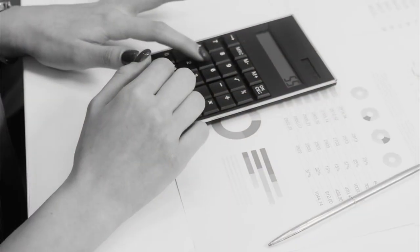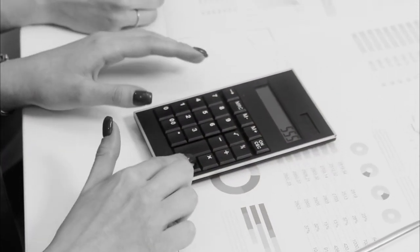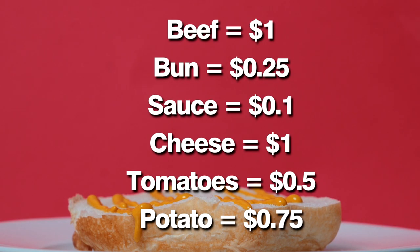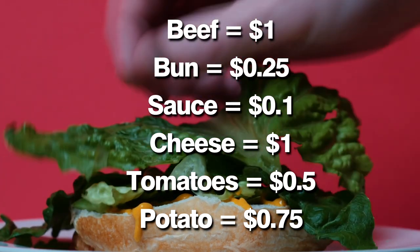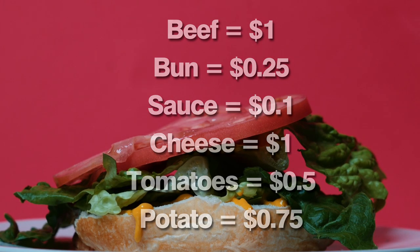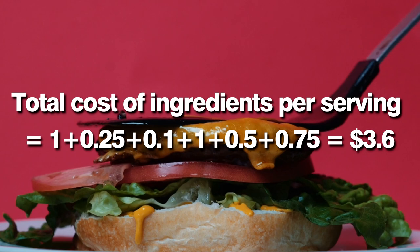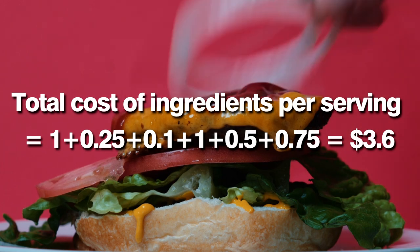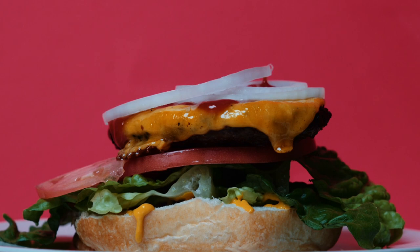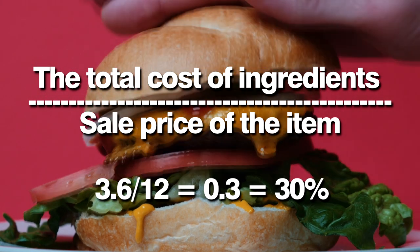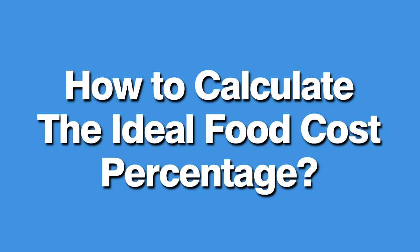To calculate the food cost percentage for a specific menu item, calculate the cost of all ingredients and divide by the selling price. For example, one burger: beef $1.00, bun $0.25, sauce $0.10, cheese $1.00, tomatoes $0.50, potato $0.75 — total cost per serving $3.60. If you're selling the burger for $12, then food cost percentage equals $3.60 / $12 = 0.3 or 30%.